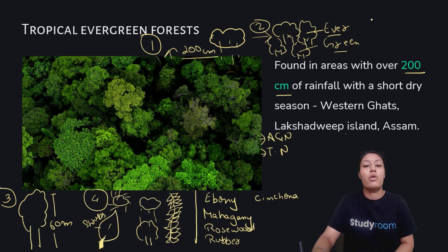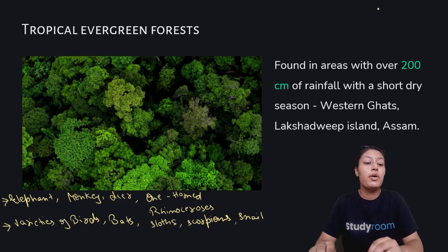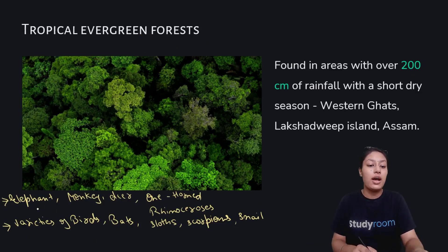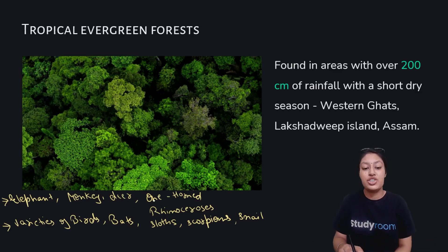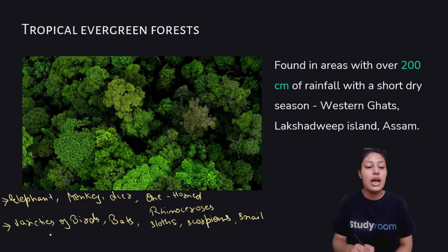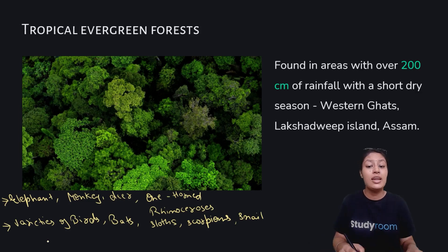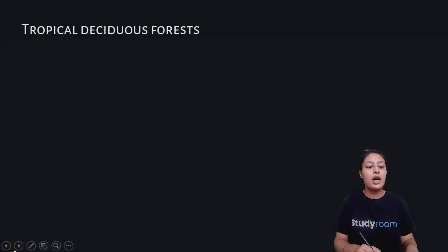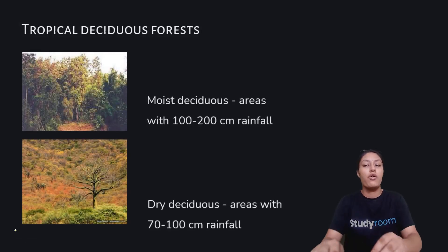Now let's talk about animals. We find monkeys and deer here. The most important animal in this region is the one-horned rhinoceros. We also find varieties of birds, bats, sloths, scorpions, and snakes.